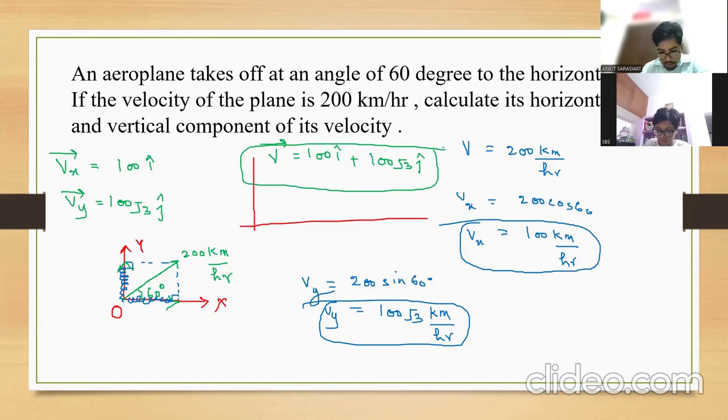If they ask for the vector form: Vx vector = 100 î (in the x-direction), and Vy vector = 100√3 ĵ. The total velocity of the aeroplane is 100î + 100√3ĵ, since it's a linear combination as we've already discussed.